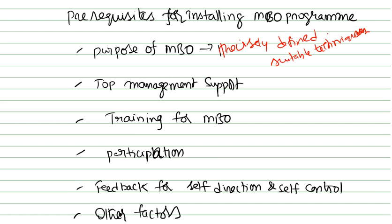Next, you must always have top management support. If I want to install an MBO program in my business, the top management is going to take the decision. In the absence of top management, you cannot even install a new program. The critical factor determining the success of the MBO program is the support of top management.